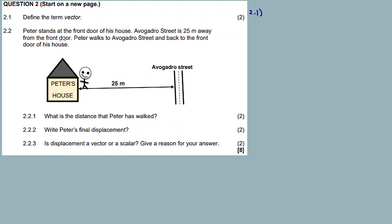First question, they give you marks right off the bat: Define the term vector. Vector is a quantity with both magnitude and direction. Magnitude and direction. This is the definition for a vector. So easy marks.